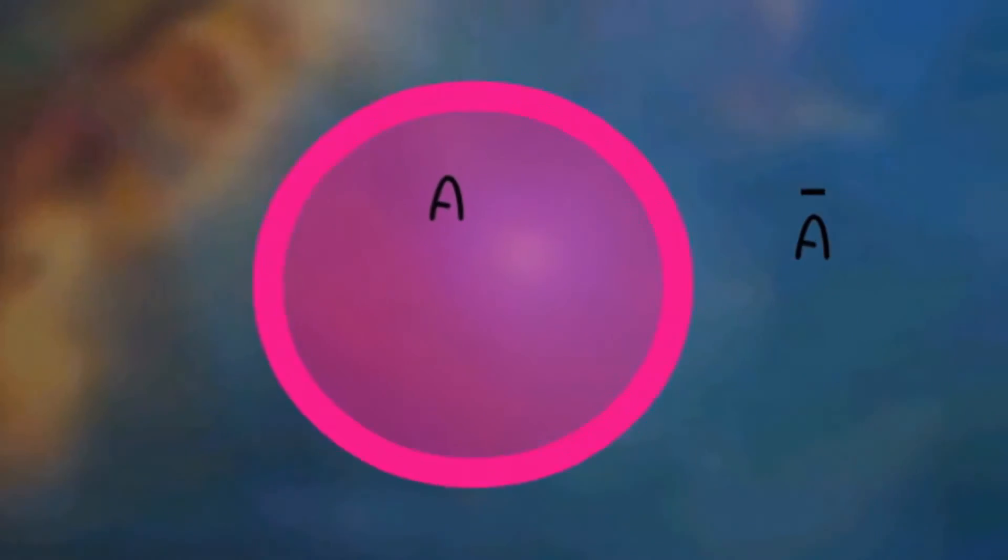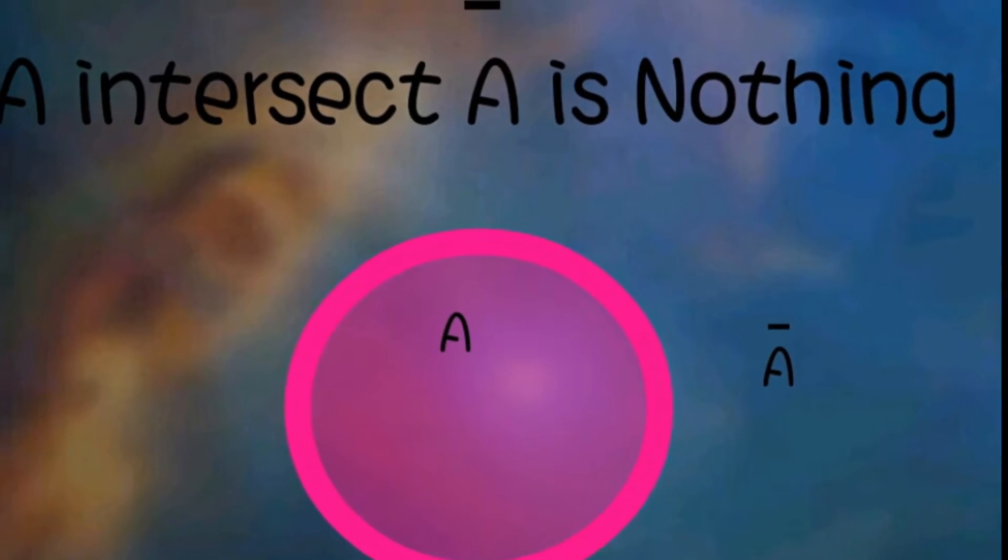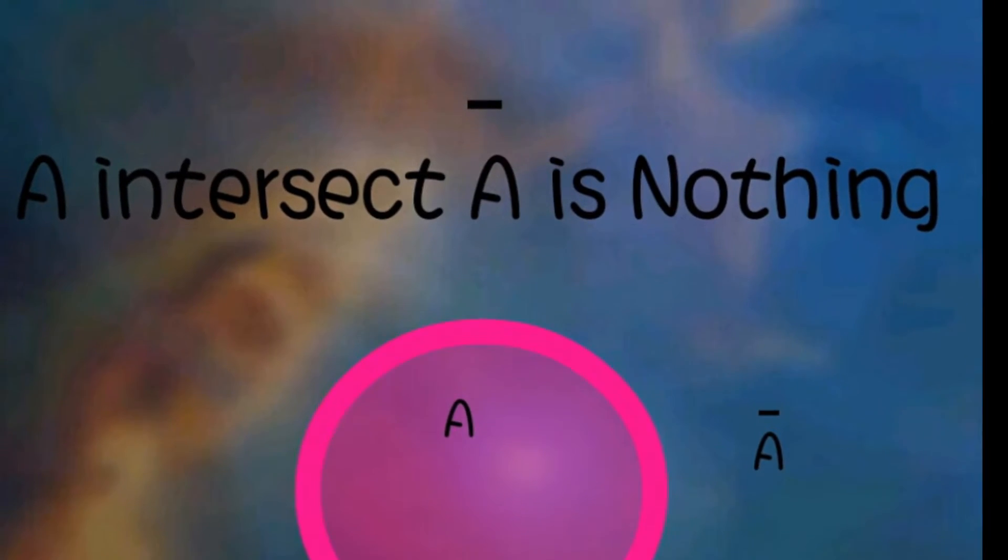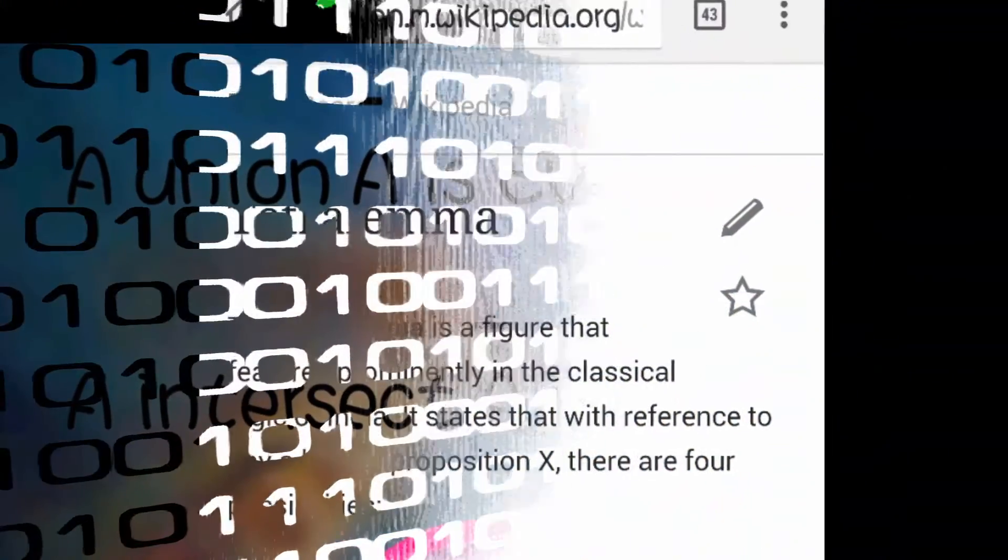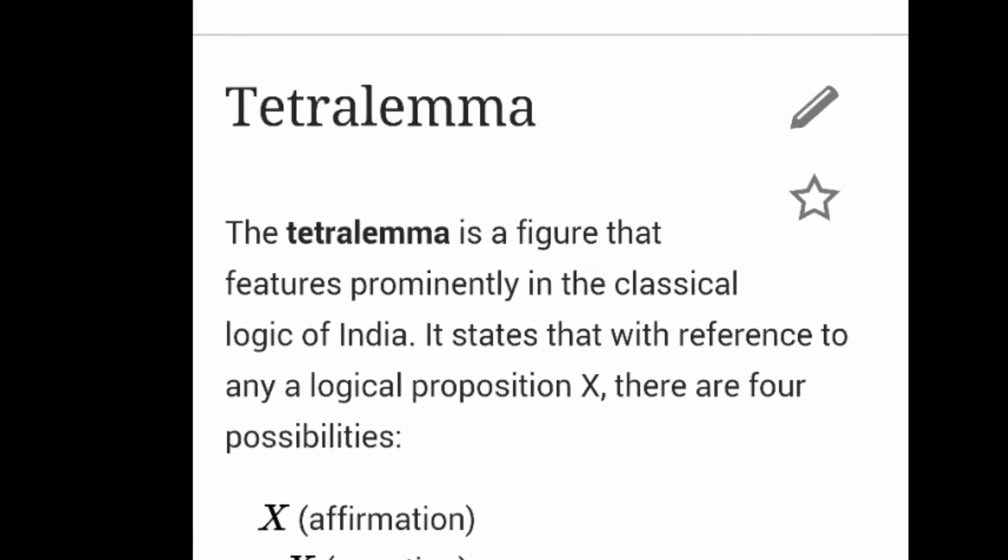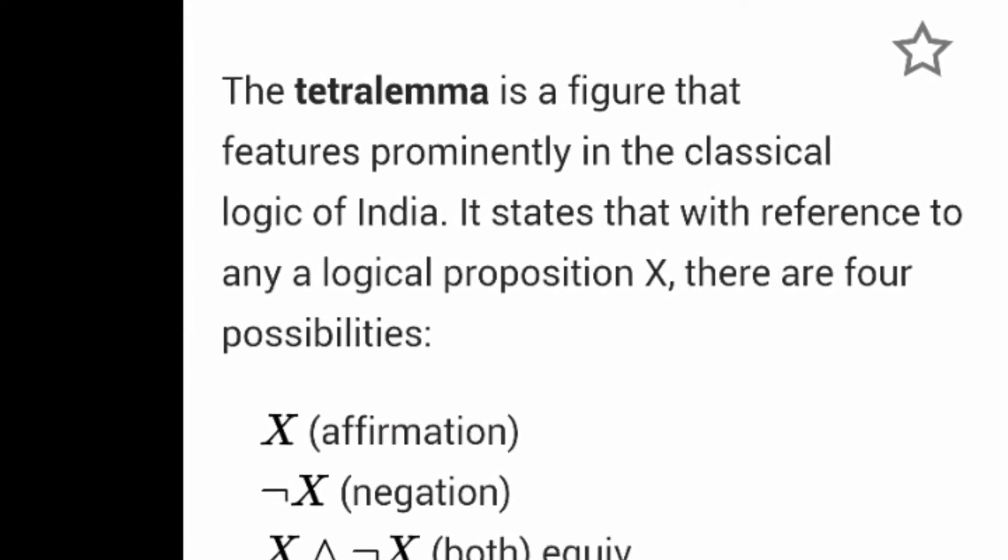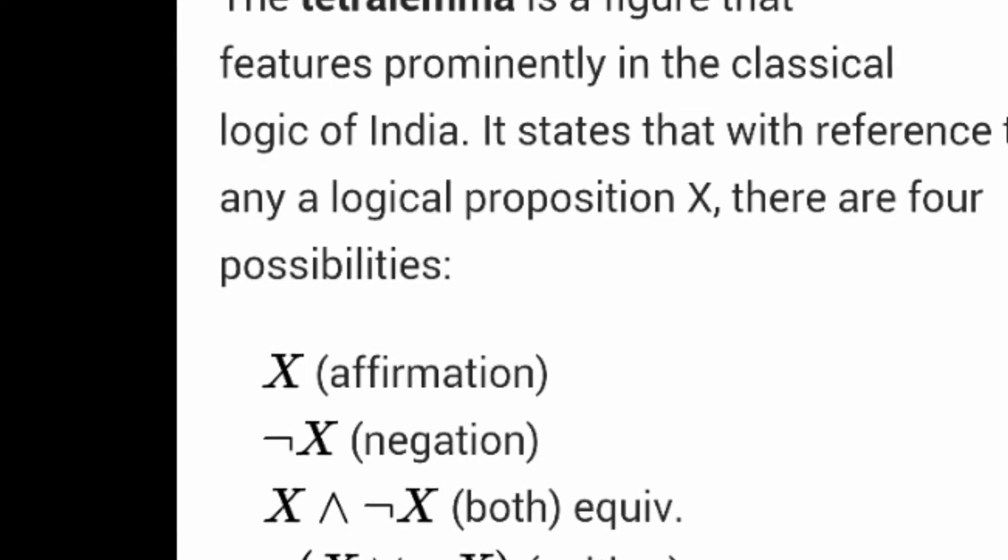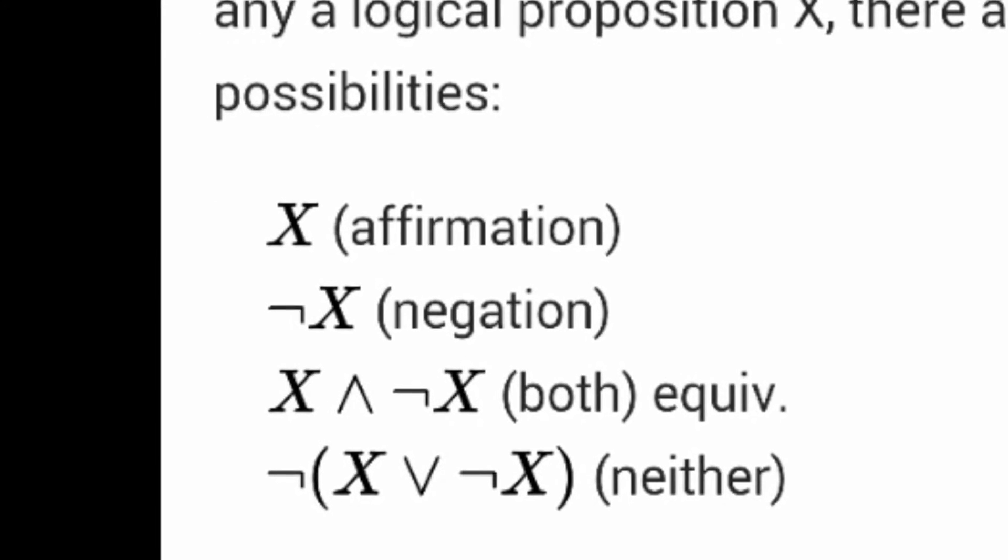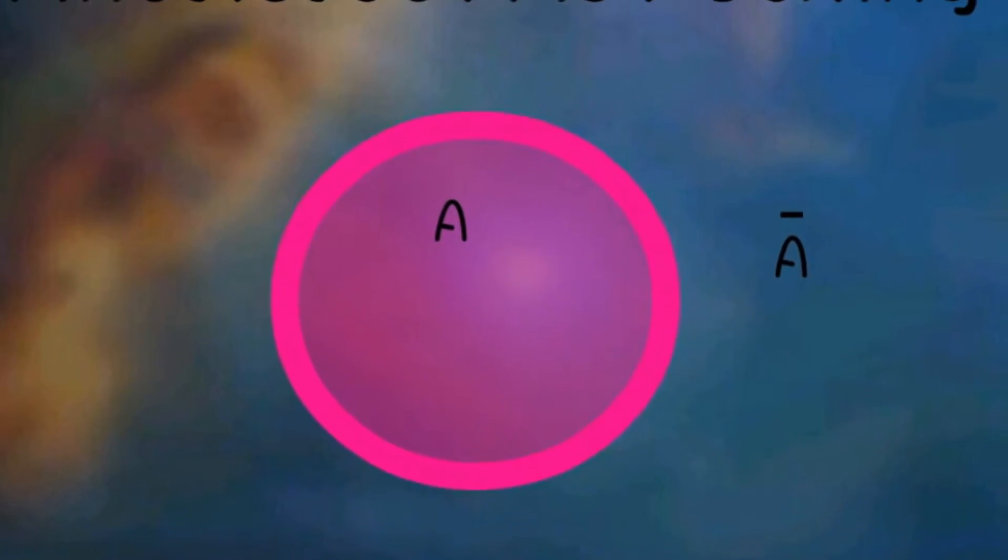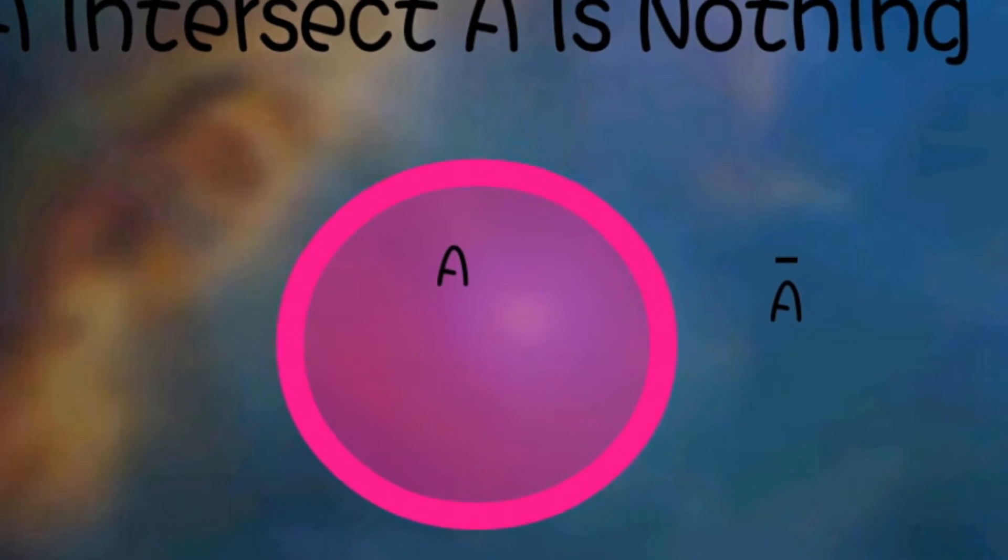Today we start before set theory. Set theory will say here's a set, what's outside the set is not A. The relationship between two things is A union not A, which is everything, and A intersect not A, which is nothing. Here we've got these four things - it's actually from India, the tetralemma. People try to form this as set theory but get into paradox. Maybe the problem is what is not A - maybe not A is not a set, it's the environment.